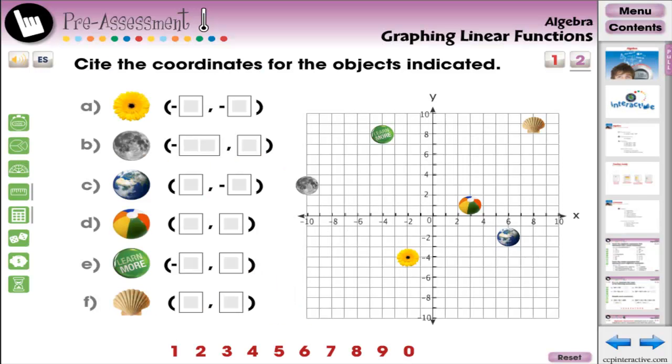Each chapter starts off with two pages of pre-assessment activities. These are designed to see what your students already know about the current topic, and is ideal for differentiated learning.